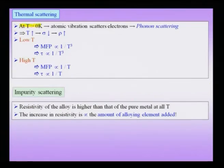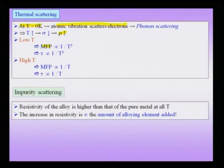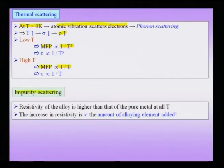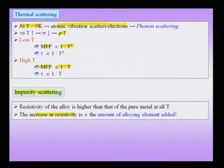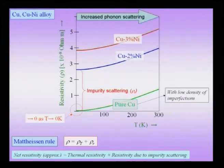At any temperature above 0 Kelvin, atomic vibration which leads to phononic scattering will cause an increase in the resistivity of the material. The mean free path is a function of temperature: it goes approximately as 1/T³ at very low temperatures and as 1/T at slightly higher temperatures. The other factor is impurity scattering — a material with an alloying element will have higher resistivity compared to a completely pure metal, and the increase in resistivity is approximately proportional to the amount of alloying element added.